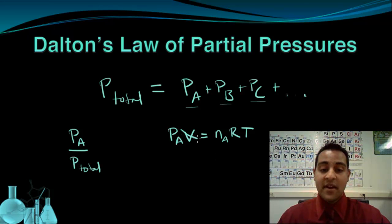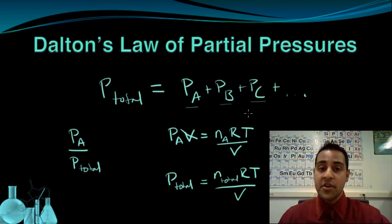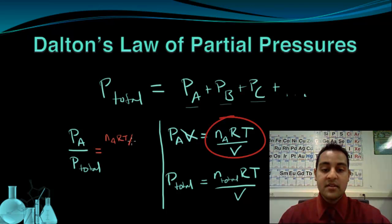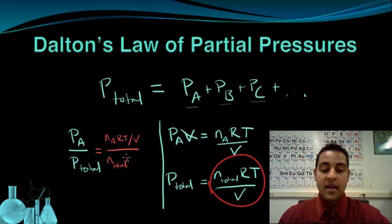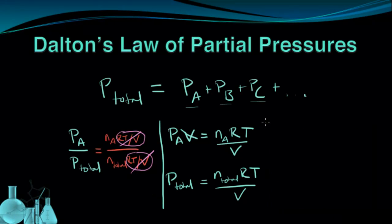I can rewrite this by dividing both sides by V to get an expression for P_A. I can do the same process for the total pressure: P_total equals N_total times R times T divided by V. Recall that in a mixture of gases, the component gases all share the same temperature and volume. So T and V are constant and the same in each equation. In the ratio P_A over P_total, the RT/V terms are exactly the same and cancel out.